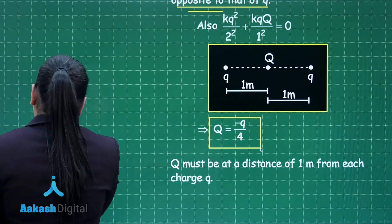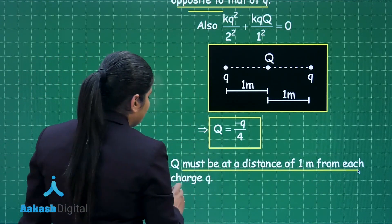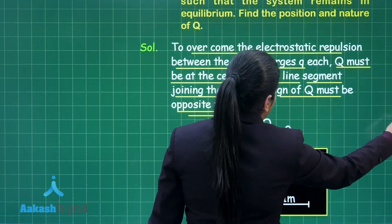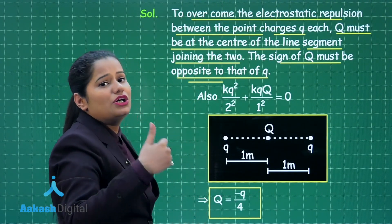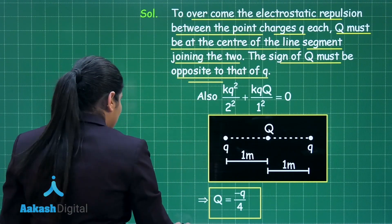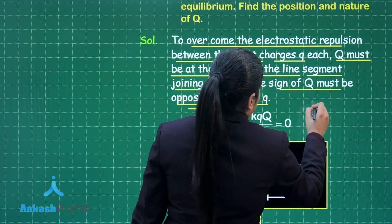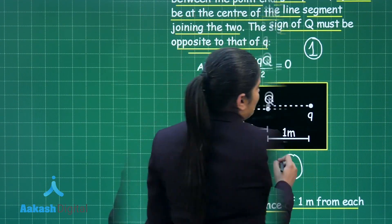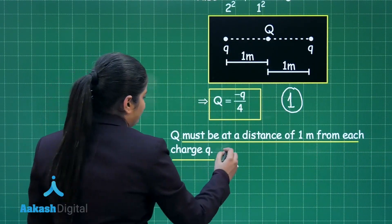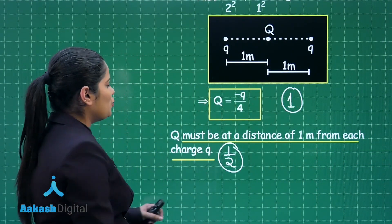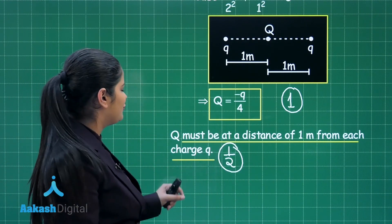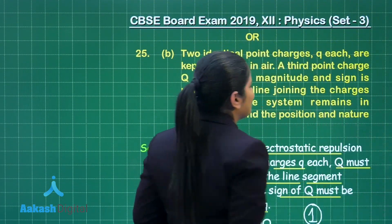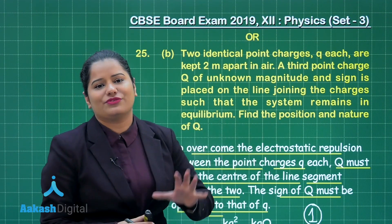Capital Q must be placed at a distance of 1 meter from each of the small q charges. For the marking scheme: 1 mark for writing the equilibrium equation, 1 mark for the calculation, and half a mark for stating that Q must be placed at a distance of 1 meter from each charge — giving 2 and a half marks for this part and 5 out of 5 for this choice of the question.